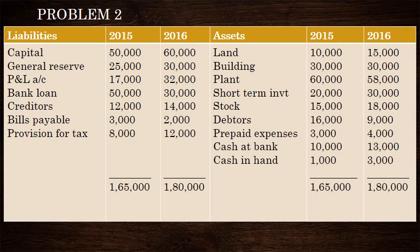General reserve is the liability side item. The item is the transfer. First step is Cash Flow from Operating Activity — Indirect Method. If we follow the details of the Indirect Method, then we will go to the next step: P&L account, Net Profit for the year.